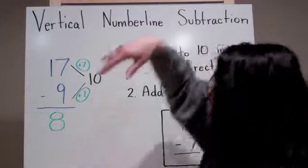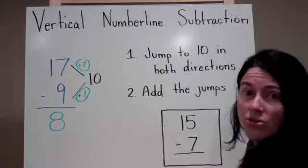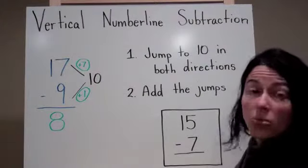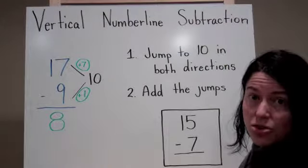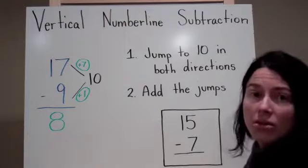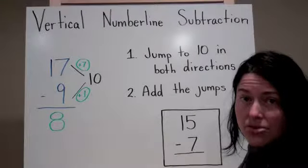So here are the steps that you will need to follow in order to use a vertical number line. Number 1, always jump to 10 in both directions. The second step, add the jumps.